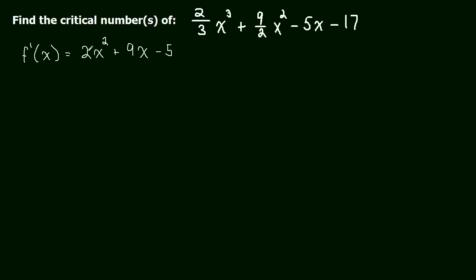But we do have to figure out when this is equal to 0. So first thing we did was find the derivative, and now we've got to figure out when it's equal to 0. That's the only way we could find our critical number. So let's set this thing equal to 0.